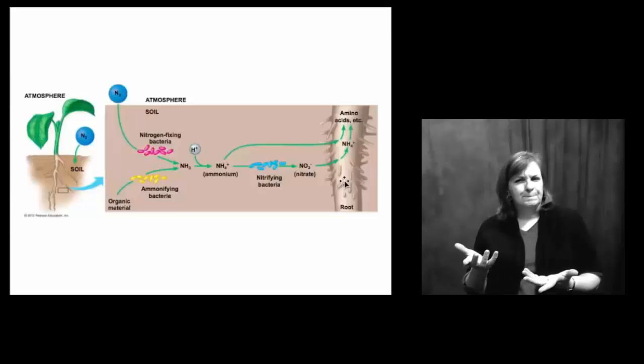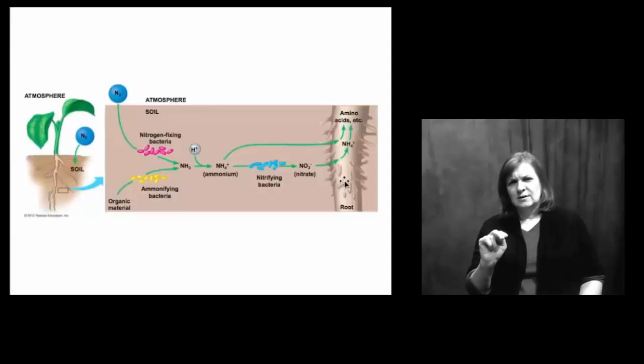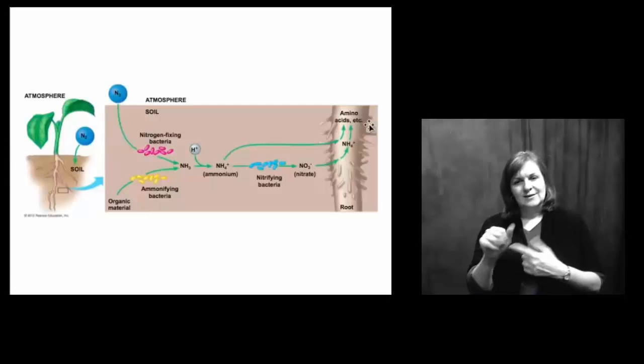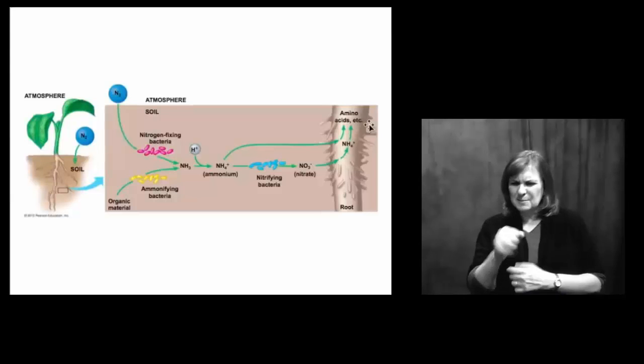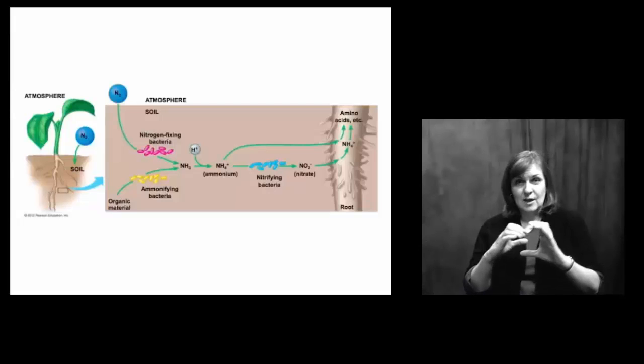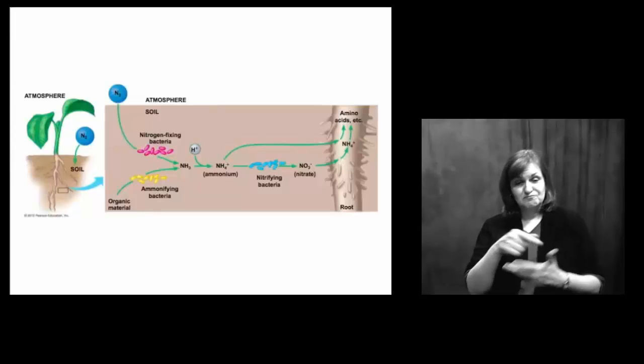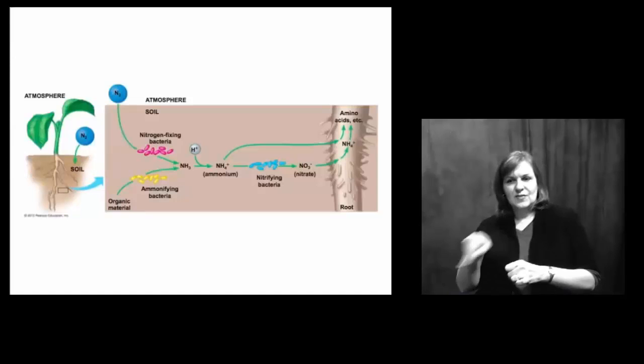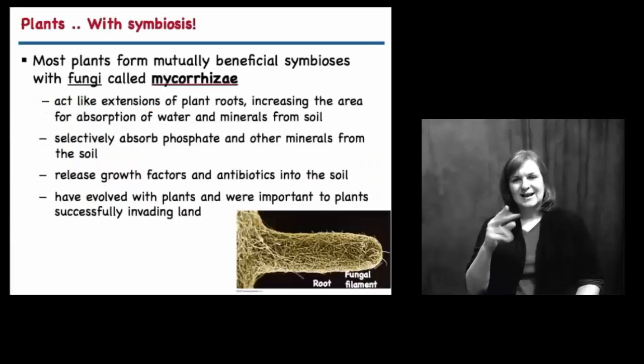So what do plants use nitrogen for? Think about where you see a lot of nitrogen in your own system. Every amino acid in your body is based in nitrogen, and amino acids make up proteins — a critical compound not only for plants but also for you. These bacteria are great, but a number of plants have gone above and beyond to make sure nitrogen is available to them.